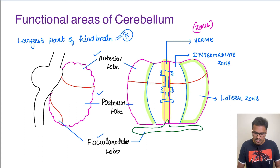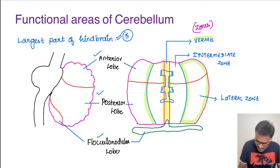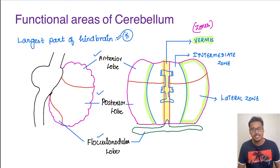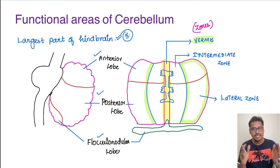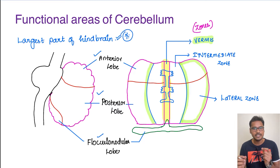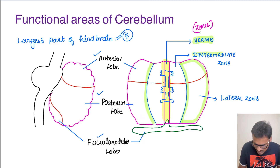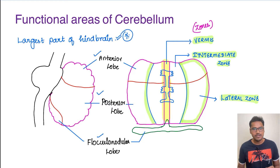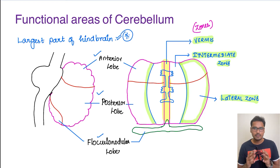Longitudinally, the central-most portion is called the vermis. Next to the vermis is the intermediate zone, because it lies between the vermis and the lateral zone. The third zone is the lateral zone. Our entire discussion will be based on these zones. The central portion is the vermis, followed by the intermediate zone, and then the lateral zones.